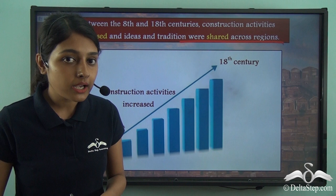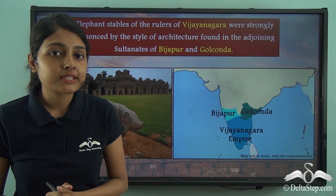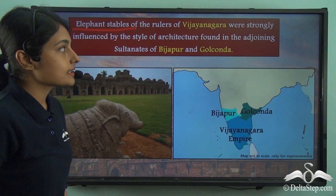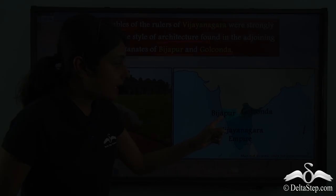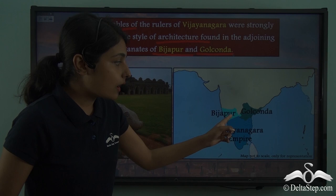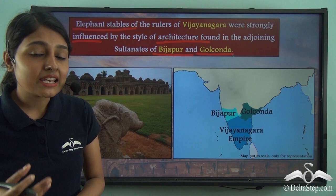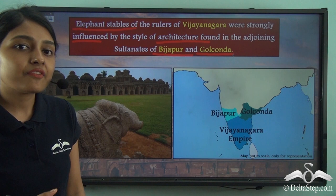This cross-fertilization of ideas among rulers between the 8th and 18th centuries can be strongly felt in the Vijayanagara area. There, the elephant stables of the rulers were strongly influenced by the style of architecture found in the adjoining sultanates of Bijapur and Golconda. This testifies to the idea that cross-fertilization of ideas took place during this period.